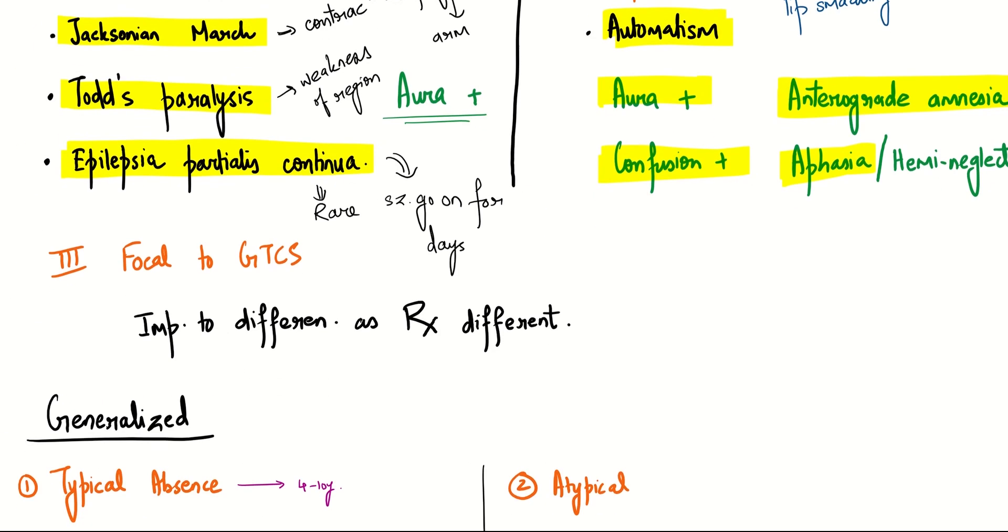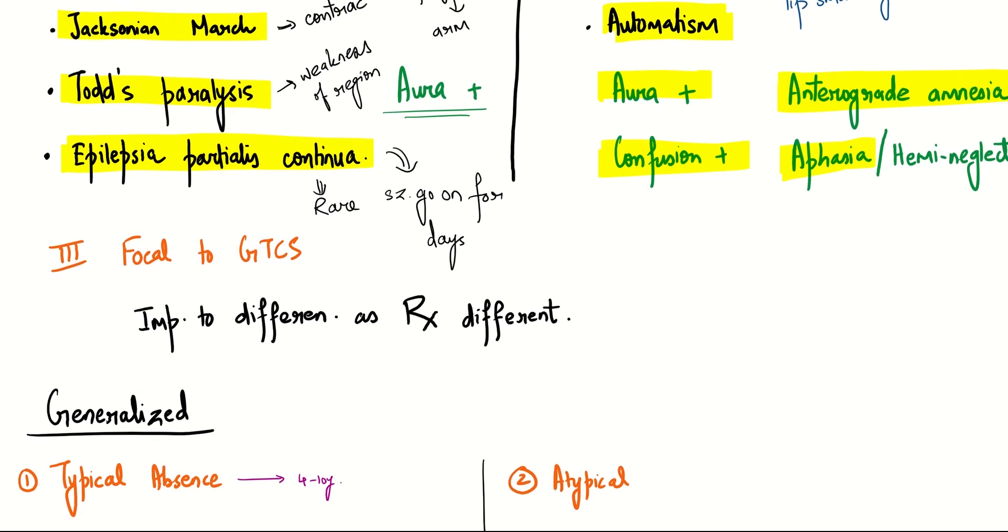Then we move on to the third and last focal seizure, which is focal to generalized tonic-clonic seizure. It is important for us to differentiate this seizure from primary generalized tonic-clonic seizure, as the treatment is different.